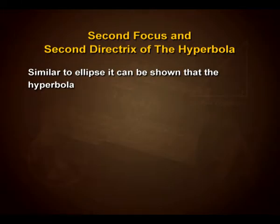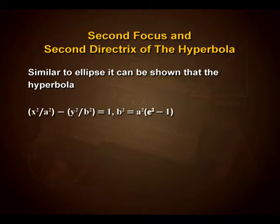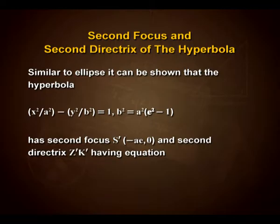Now let us discuss the second focus and second directrix of the hyperbola. It can be shown that the hyperbola x²/a² − y²/b² = 1, where b² = a²(e² − 1), has second focus (−ae, 0) and second directrix x = −a/e.